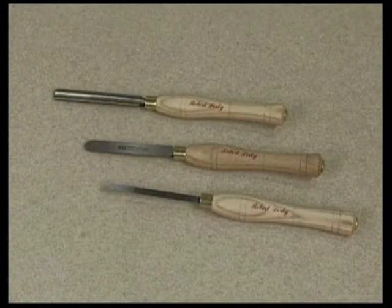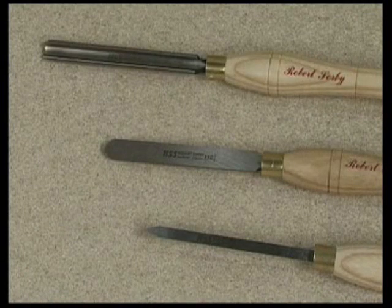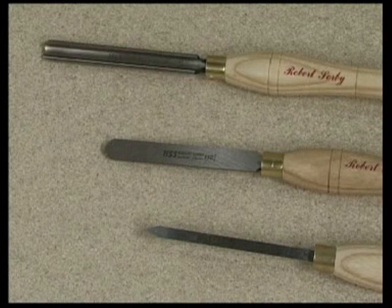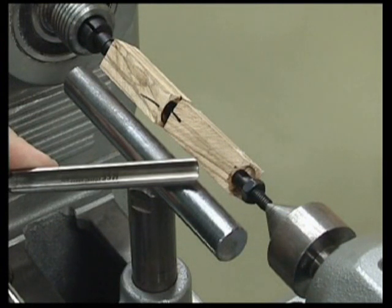All pen turning can be turned with three basic tools: a roughing out spindle gouge, a parting tool, and if necessary a spindle gouge, skew, or similar tool. For this pen I shall be using one tool, the roughing out spindle gouge.